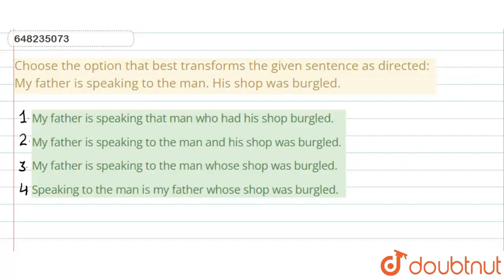Hello everyone, this is our question. Choose the option that best transforms the given sentence as directed. The sentence is: My father is speaking to the man, his shop was burgled.